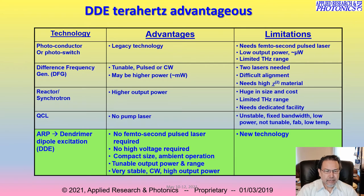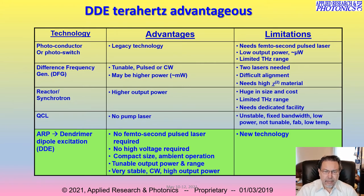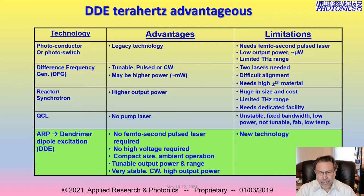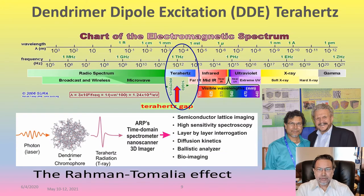We came up with dendromal dipole excitation. It does not require a femtosecond pulsed laser, does not require high voltage or vacuum, is very small and compact, and all operations are under ambient conditions. It gives us very stable continuous wave, high power, and high bandwidth T-ray or terahertz.